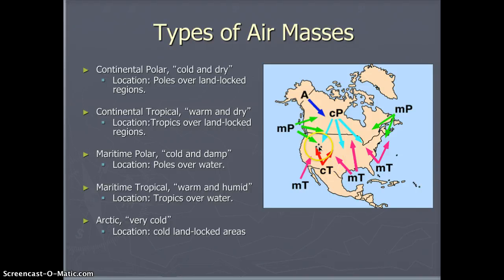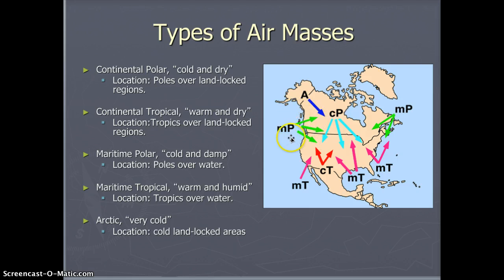The third type of air mass is a maritime polar. The word maritime means from the ocean, and polar means cold. So this kind of air mass is cold and wet. This is the area like Seattle, Washington, Oregon, and British Columbia in Canada. We don't usually see much of this weather because it comes from over the Pacific and gets used up in the northwestern United States.